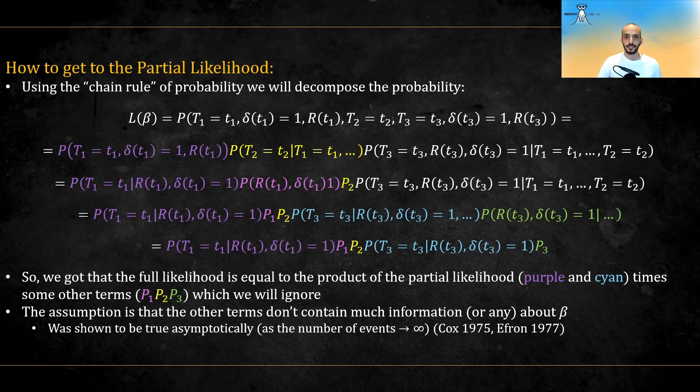Since we don't care about censors, again, h0 might be 0 at t2 for all we know, we will collapse this probability and just denote it as p2. We will do the same for this probability in pink, which we will call p1.